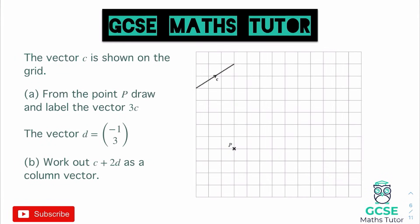The vector C is shown in the top left of the grid. From point P, we need to draw and label the vector 3C. Let's establish the pattern: it goes along 3 and up by 2. We want to do 3C, so starting at P, we go across 3, up 2 — that's 1C; across 3, up another 2 — that's 2C; and across 3, up another 2 — that gets us to there, so that's 3C.